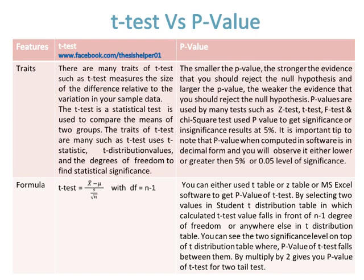The formula of the t-test is: t equals x-bar minus mu, divided by the standard deviation, further divided by the square root of sample size n, with degree of freedom df equal to n minus one.